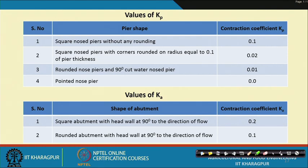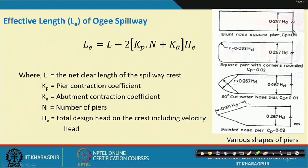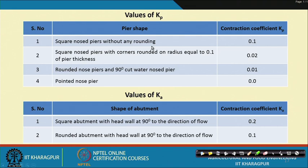Coming to different values of K_p: for a square nose pier without any rounding, the contraction coefficient is 0.1. For a square nose pier with corners rounded to a radius of 0.1 of pier thickness, it is 0.02. Similarly, for different pier shapes and abutment shapes, K_p and K_a values vary and are given in a table depending on the problem at hand.